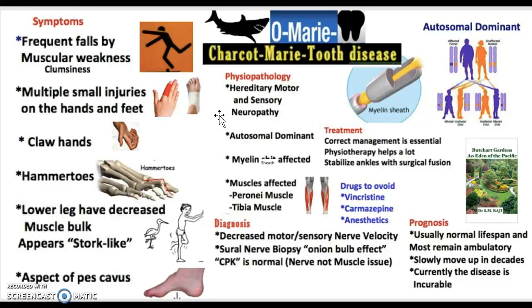Starting with physiopathology, you have to understand that Charcot-Marie-Tooth is a hereditary motor and sensory neuropathy. That means it puts emphasis on genetics. It is autosomal dominant, meaning it runs through every single part of the family and will continue for every generation that comes.